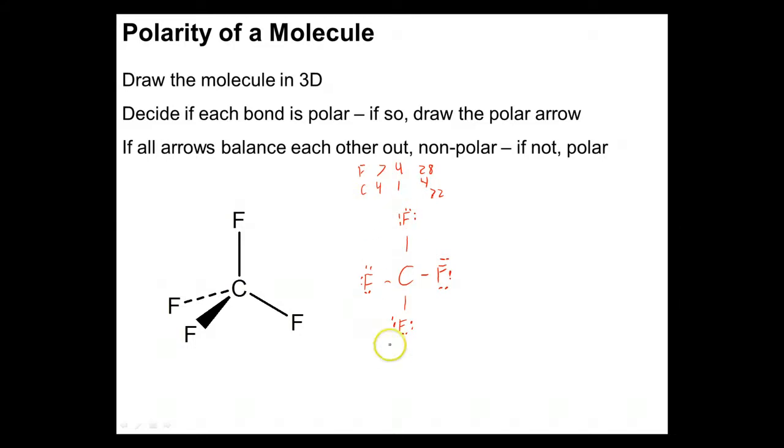We see here that we have our full octet filled for everything. The outside fluorines are set, the carbon is set. That means it's AX4, 1, 2, 3, 4 bonding regions, AX4, no E's, no electron pairs. Tetrahedral geometry, and you see that drawn in right there.